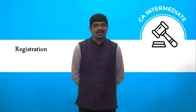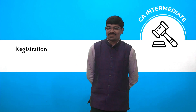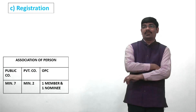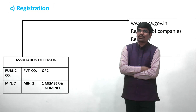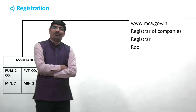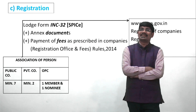Once the formation and documentation process is completed, you move towards the registration process — registration of the company with ROC. You need the required association of persons: 2 for private company, 7 for public company, and 1 member plus 1 nominee for OPC. This association of persons submits the forms, documents, and fees online to the Registrar of Companies via www.mca.gov.in.